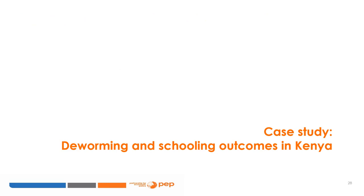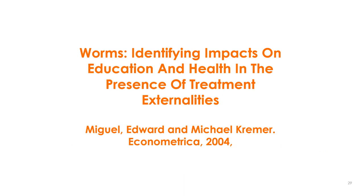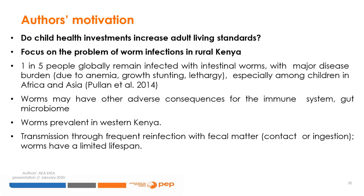The next example of externalities and general equilibrium effects is a case study of deworming and schooling outcomes in Kenya, based on the paper "Worms: Identifying Impacts on Education and Health in the Presence of Treatment Externalities" by Edward Miguel and Michael Kremer, published in Econometrica in 2004. The authors' main motivating question is: do child health investments increase adult living standards? They focus on the problem of worm infections in rural Kenya, where one in five people in the world are infected with intestinal worms — a major disease burden because of impacts on anemia, stunting, and other health consequences, especially prevalent among children in Africa and Asia.